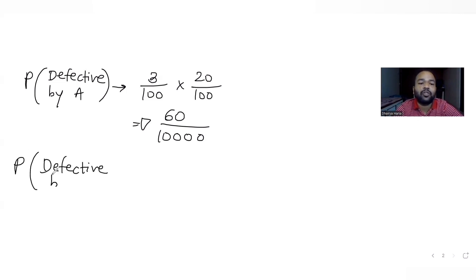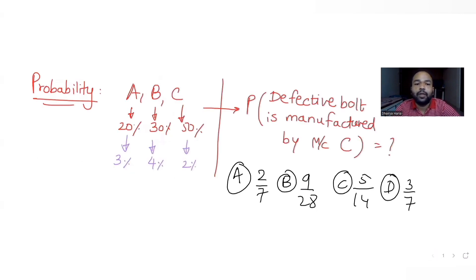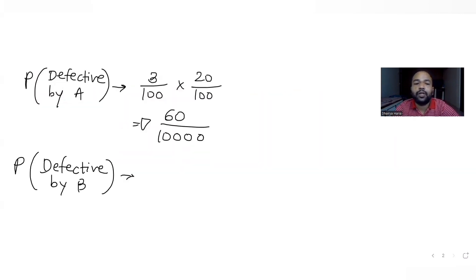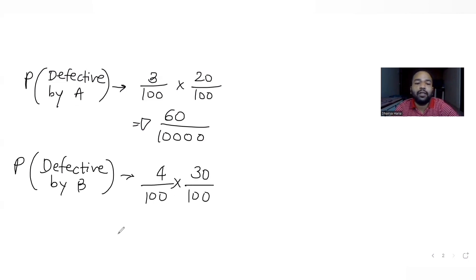Next, the probability of a defective bolt manufactured by machine B is 30% of the total bolts, and out of that 4% are defective ones. That gives us 120/10,000.